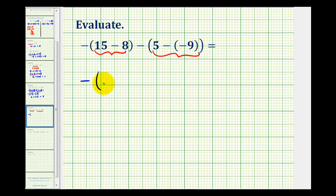So we'll have the opposite of, actually for 15 minus 8, there's no reason to write that as an addition problem. And that's just going to be positive 7. But we are going to write 5 minus negative 9 as 5 plus 9.